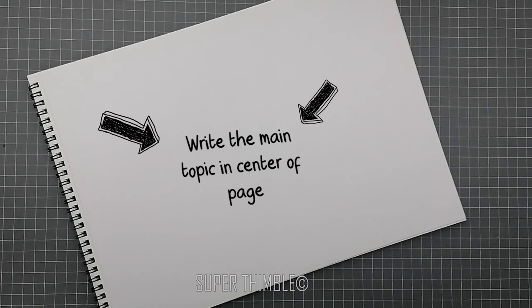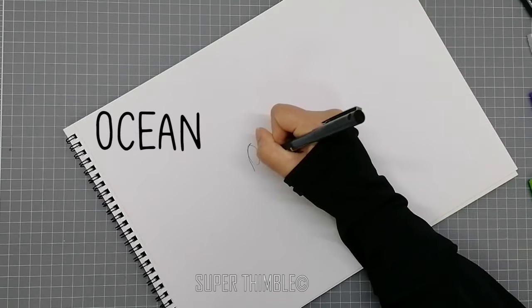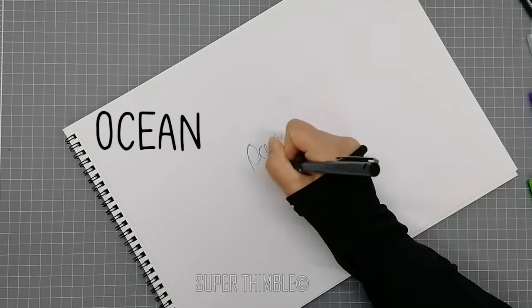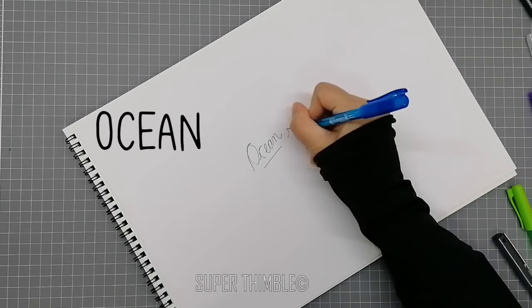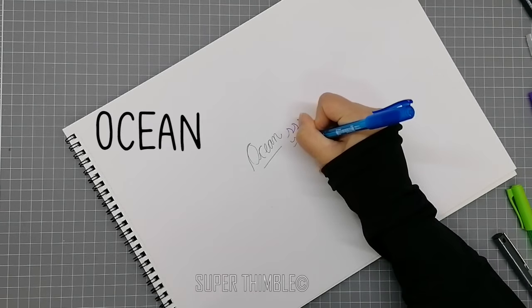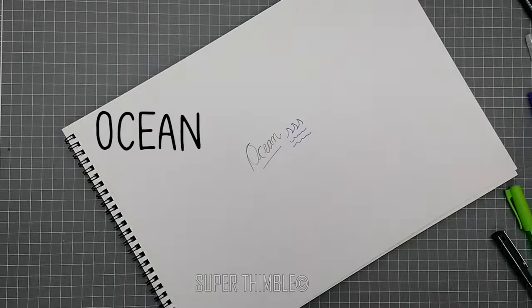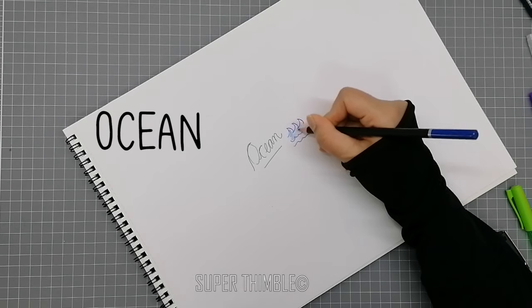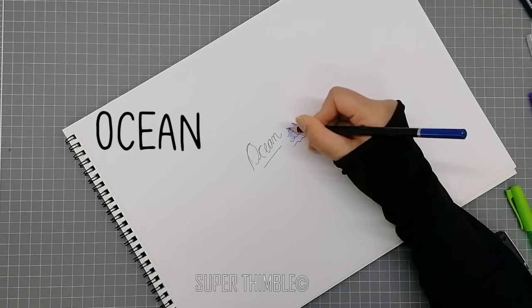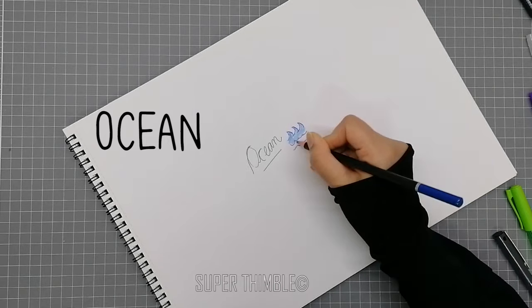Let's take an example over here. For my collection, I want ocean as the main thing. Now I'm going to add keywords, asking myself why ocean, what are the feelings or factors attached with this ocean.